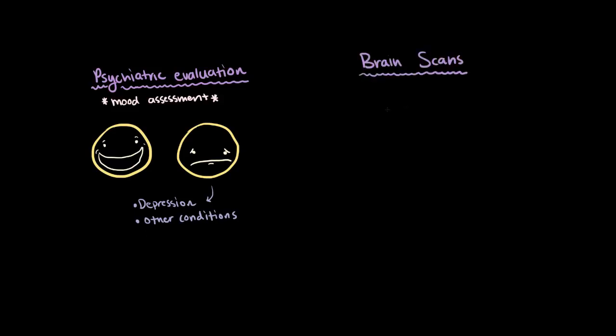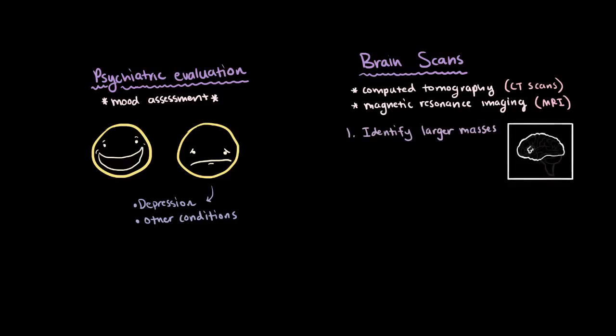Finally, the patient might have brain scans. With a brain scan, the brain is actually visualized through techniques like computed tomography, or CT scans, or magnetic resonance imaging, or MRI. And there are several reasons why we might want one of these performed. They might be useful in identifying larger masses, like tumors, that can be contributing to the cognitive impairment.